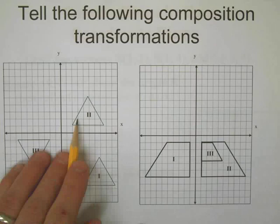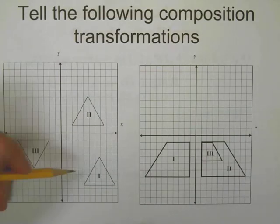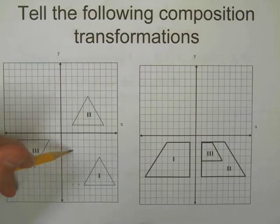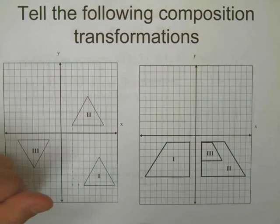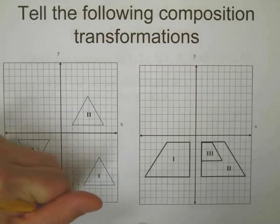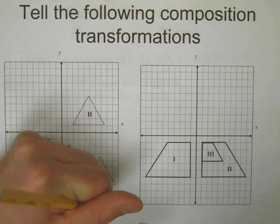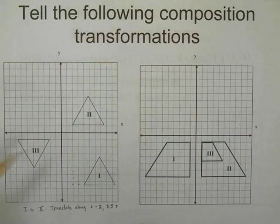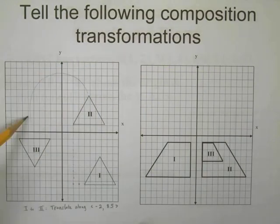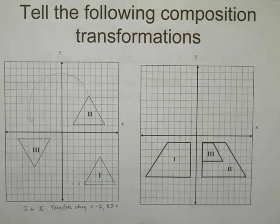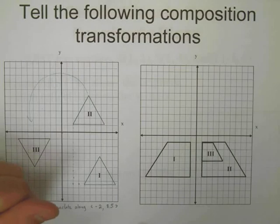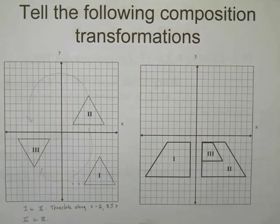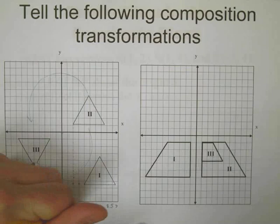Let's identify what's going on in these examples. To get from one to two, we went left two units and up about eight and a half units, so we translated along the vector (-2, 8.5). To get from two to three, it looks like it rotated around the origin. That looks like a 180-degree rotation — and notice we could go 180 degrees either direction and get the same result, so we'll say rotate 180 degrees counterclockwise around the pivot point (0, 0).